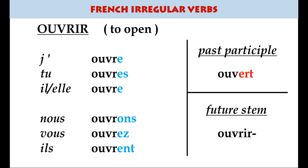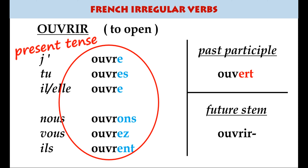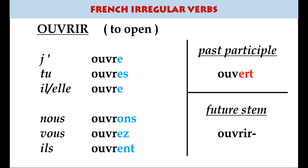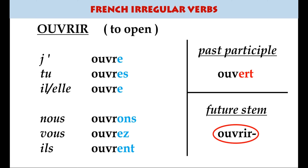The first verb is ouvrir, meaning to open. On the left is the present tense, where most irregularities occur; on the right I've put the past participle and the future stem — in this case the future stem is simply the infinitive. Ouvrir follows the er verb pattern: j'ouvre, tu ouvres, il ouvre, nous ouvrons, vous ouvrez, ils ouvrent.